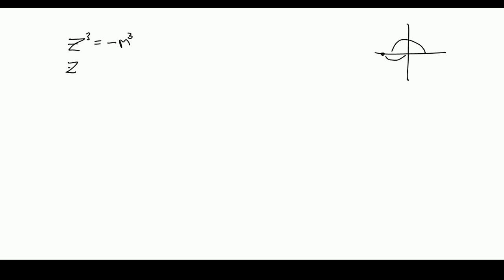So that means I can write z³ = m³ cis(π + 2nπ). Now I've got to stress that this is just m³, it's not -m³, and that's the mistake people make. So I'm now going to do the cubed root of each side. That gives me z = m cis((π + 2nπ)/3) from De Moivre's theorem.